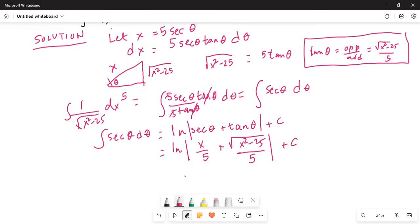This becomes natural log absolute value x minus ln 5 plus ln absolute value square root of x squared minus 25, and then it becomes minus and minus, it will be plus ln 5 plus c. So natural log 5 is just a constant which cancels out.